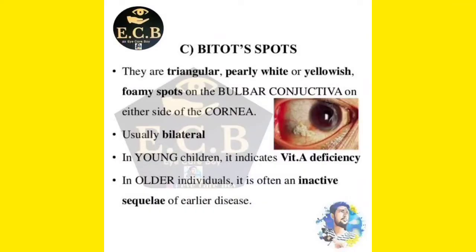Bitot's spot is basically a triangular, pearly white — yellowish in nature — foamy spot. It looks like some foam is present there, which is why it is called a foamy spot. We can find it on the bulbar conjunctiva, on either side of the cornea.